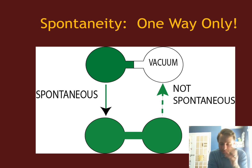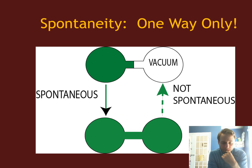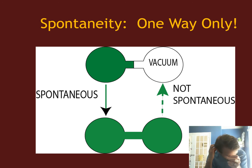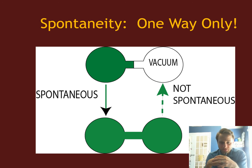For a given temperature, pressure, and volume situation, only one direction of a change is going to be spontaneous — the other direction will always be non-spontaneous. That does it for this video on what spontaneity is. There's a need for something else, and that something else is entropy. In the next video, we're going to start talking about what entropy is and how we classify it.